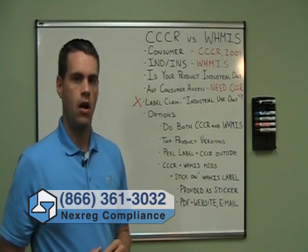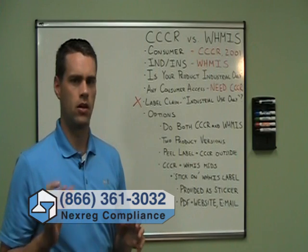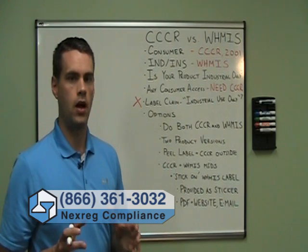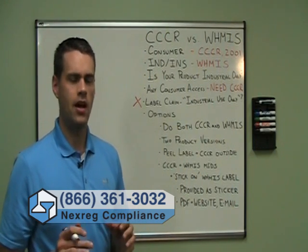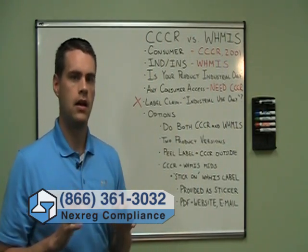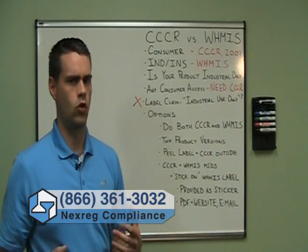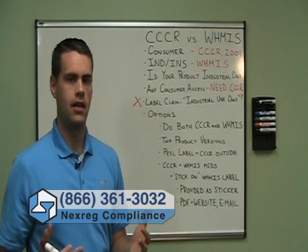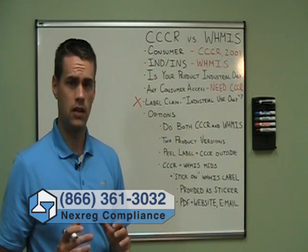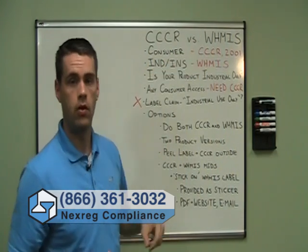So what are your options if you have a product that's neither purely consumer nor industrial — a hybrid of both? An obvious thing to do would be to label your product for both CCCR and WHMIS. But since the CCCR has symbols and text on the back while WHMIS has its own panel, that's only going to work if you have a product in a large container — something in a 50-liter or 20-gallon container. For smaller containers it may not be feasible, but if you can do it, it's one way of satisfying both standards.